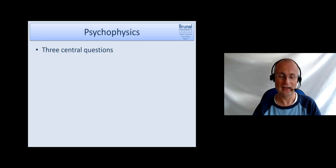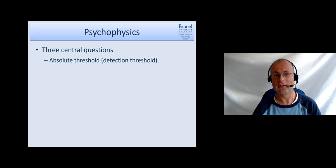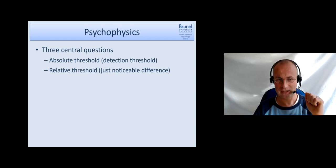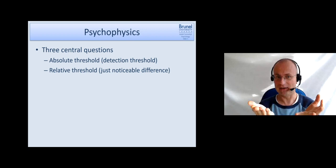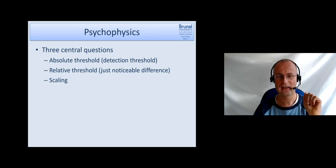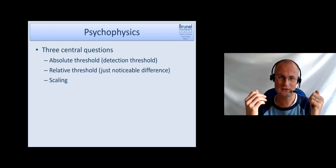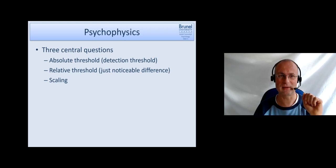In psychophysics we can ask three very central questions. The first one is about the absolute threshold, or also called detection threshold—so how strong does a stimulus need to be so that I can detect it? You may know these hearing tests where you have very faint sounds and you have to say yes I heard a sound or didn't hear a sound, press a button. The relative threshold: if you have two stimuli and they differ in their strength, how much do they have to differ so that you can just note the difference between them? And then the question of scaling: if you increase the stimulus in its physical strength, what is the increase in perceived strength?